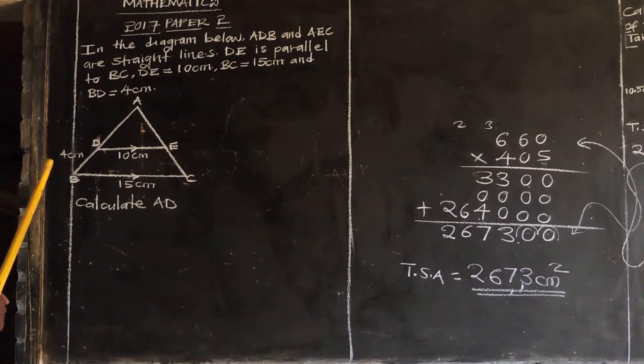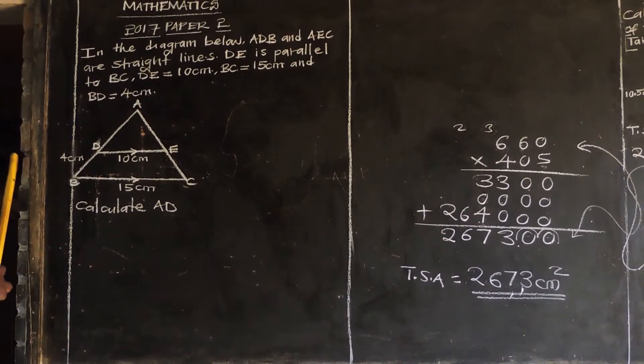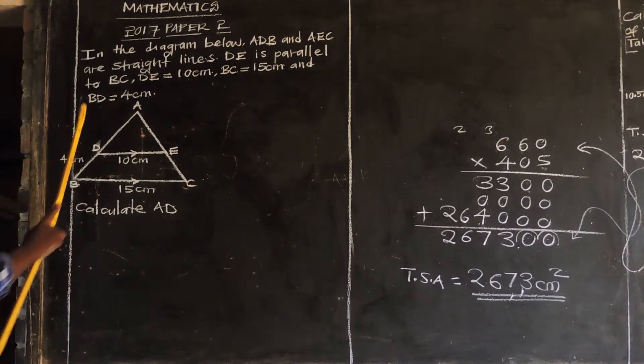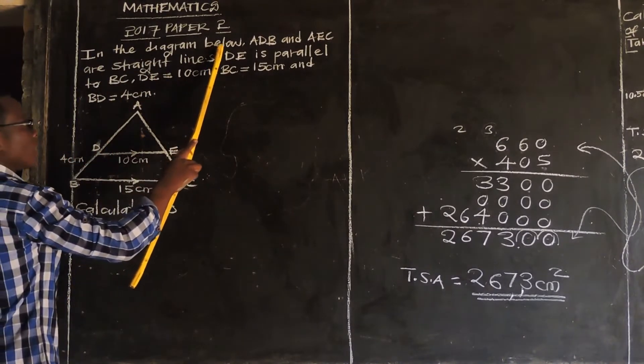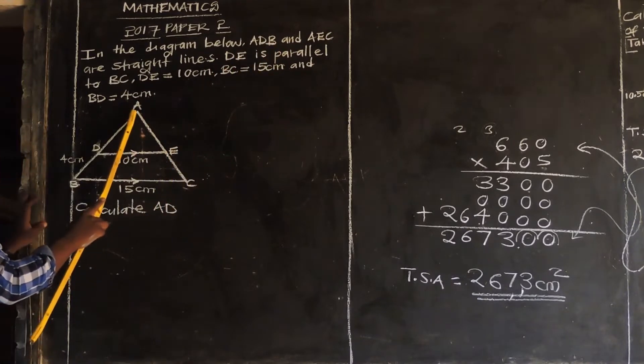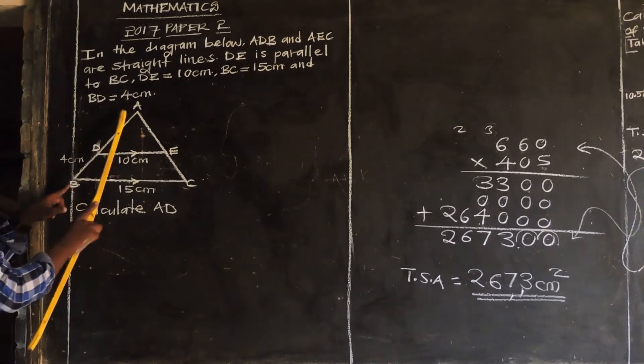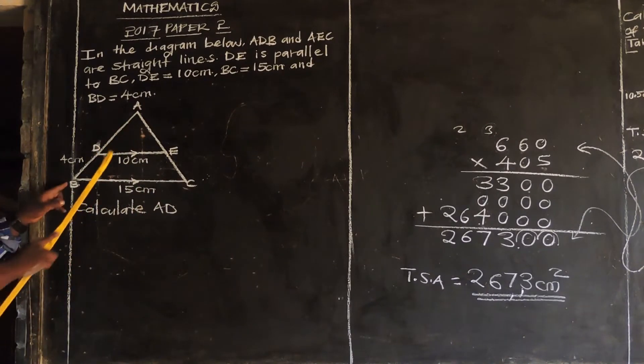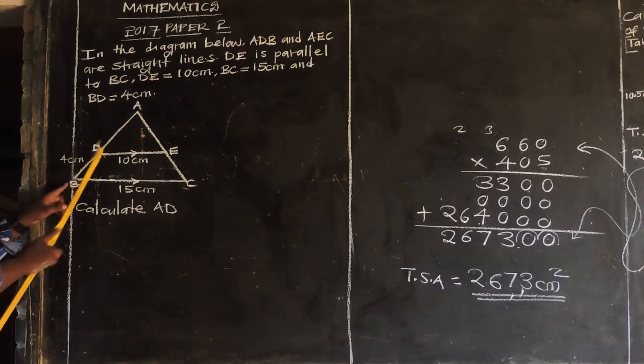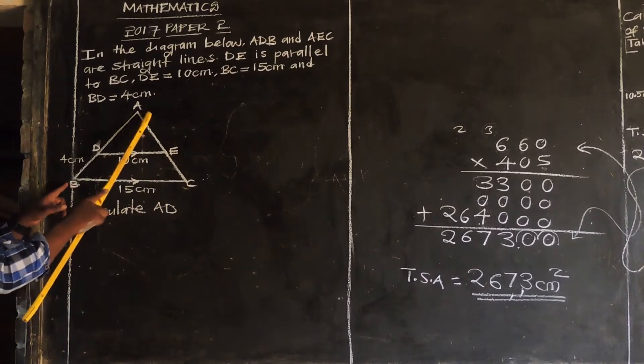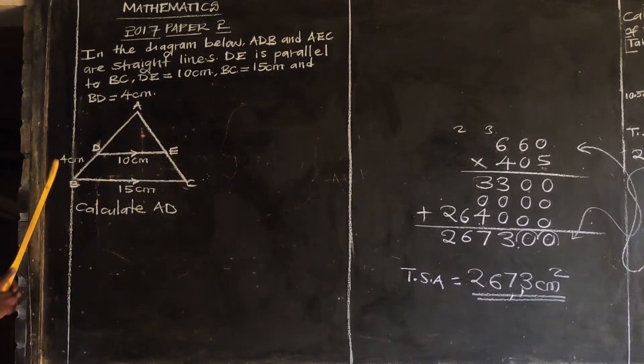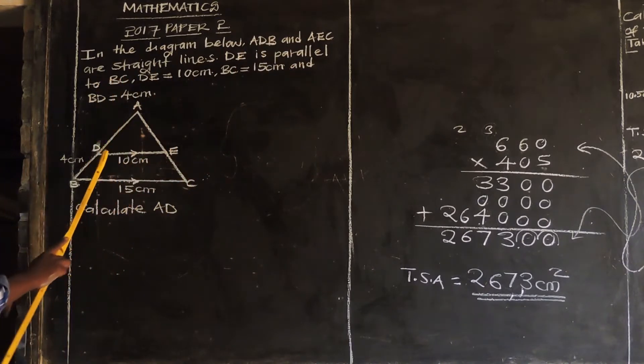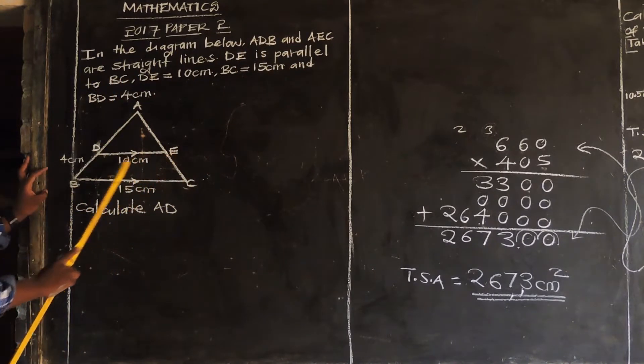Okay, so let us look at the 2017 paper 2, a question on congruency and similarity. It's saying in the diagram below, AGB and AEC are straight lines. As you can see, AGB and AEC, these two are straight lines. Then DE is parallel to BC.